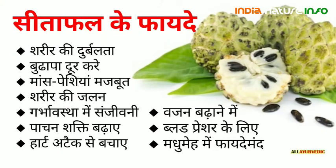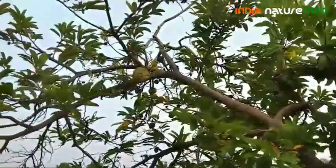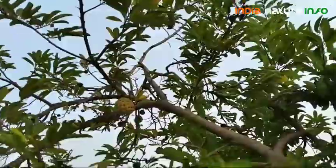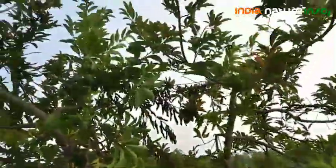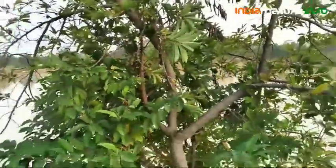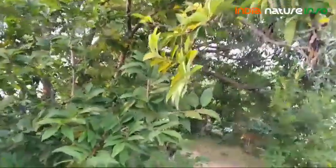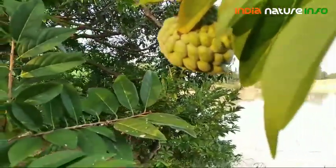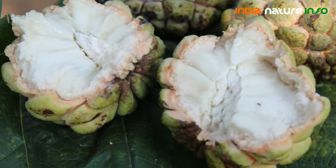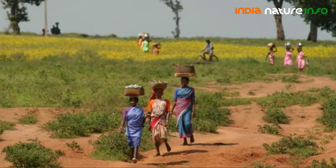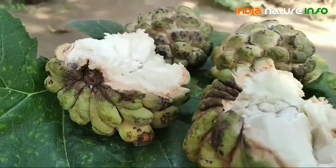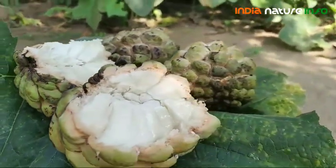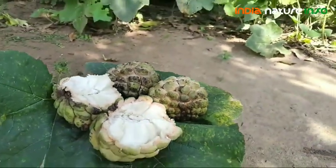We've learned about its taste and benefits. Now let's know how to grow it and in which season its fruit is available. Its flowers come at the end of the rainy season and gradually change to fruit. It grows big over time and the fruit is available by the end of October.